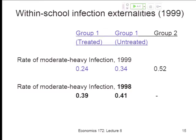Everybody within the treatment schools was offered treatment — the randomization was across schools. The NGO carrying out this intervention wanted everybody possible to get treated: information sessions, free drugs, brought to the school. About three-quarters got treated, and that quarter who were not treated don't look radically different from those who were. We didn't really know what the answer would be to this question.